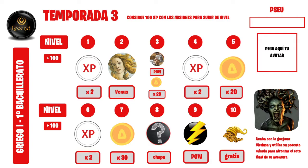Luego tenemos el nivel 10: la cornucopia, el cuerno de la abundancia, con la palabra 'Gratis' debajo. Quiere decir que van a tener un artículo gratis de la tienda. El que llegue a nivel 10 puede elegir lo que quiera de lo que haya disponible. Recuerden que la tienda es una tienda virtual que yo tengo llamada Cornucopia, en mi página web. En esa tienda no vendemos nada al público; es una tienda virtual entre los alumnos de griego y cultura clásica, donde comerciamos con dragmas que pueden canjear por distintos objetos y cosas que hay en la tienda.